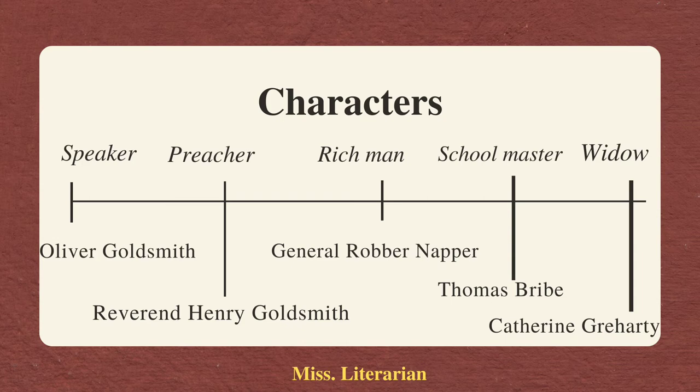The next character is a schoolmaster. He is a kind, intelligent person. His character represents Thomas Bright, who was a schoolteacher of Oliver Goldsmith. He is a knowledgeable person whose aim is to educate all the children in the village. He even turns his own house into a school.